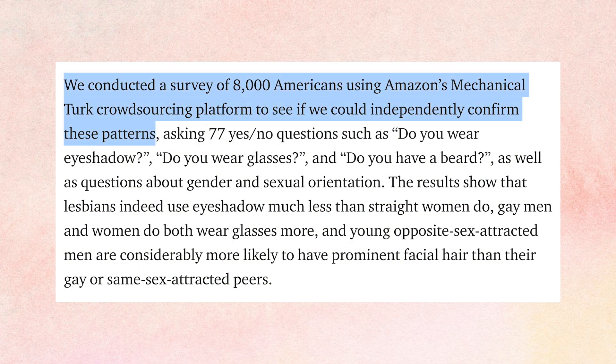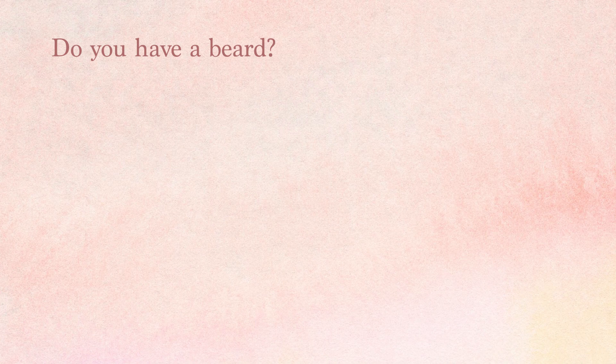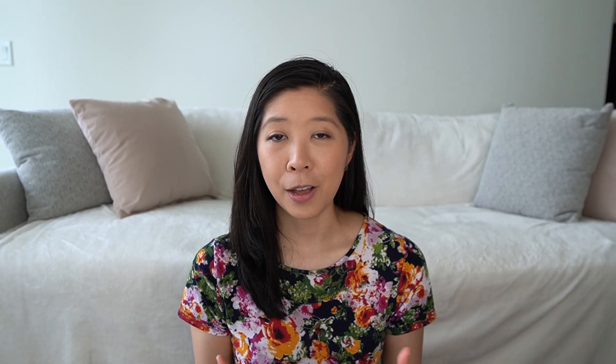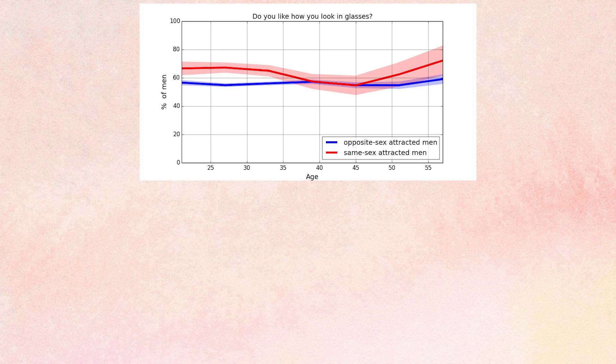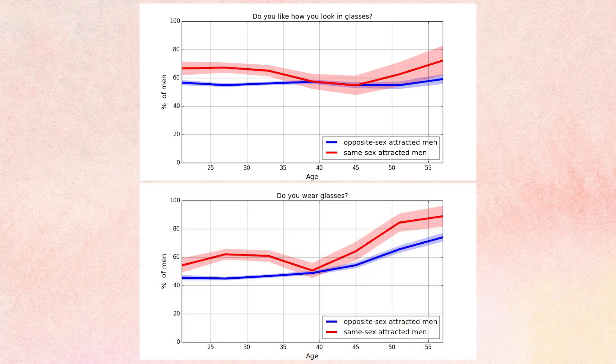Blaise and his colleagues surveyed 8,000 Americans to confirm patterns between preferences in how people choose to present themselves and their sexual orientation. They asked questions like: do you have a beard, do you wear eyeshadow, do you wear glasses? They found that straight men are more likely to grow a beard, straight women tend to wear more eyeshadow, and gay men and women wear glasses more often. His survey also found a correlation between wearing glasses and liking how you look in glasses, meaning it's a stylistic choice, not that straight men just have better eyesight.